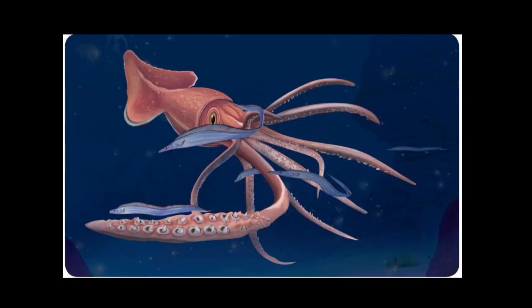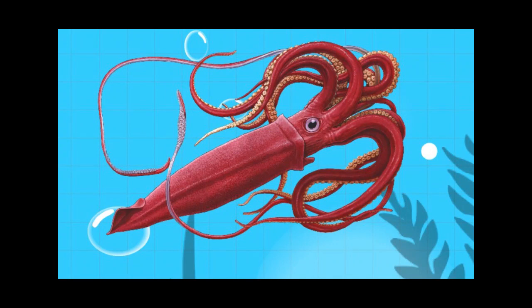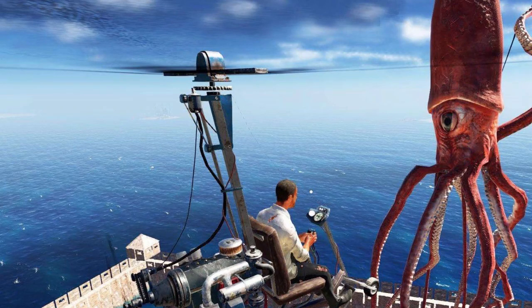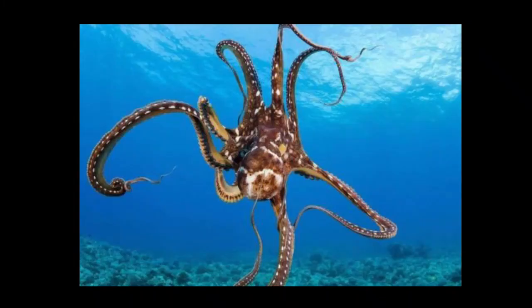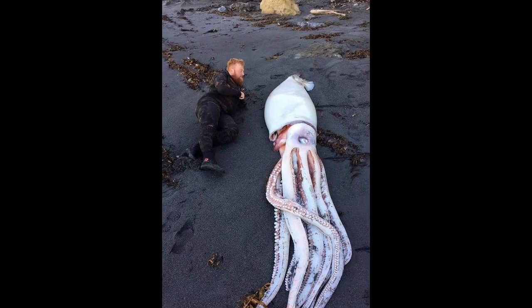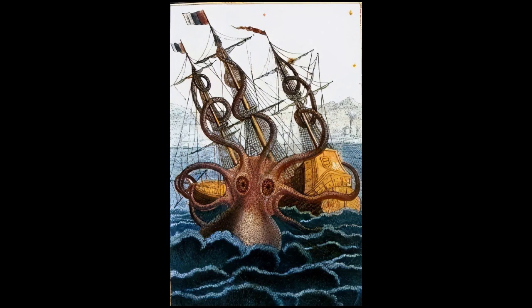The giant squid inhabits depths ranging from 300 to 1,000 meters. Their body length can reach over 10 meters, and some individuals weigh more than 100 kilograms. Their eyes are exceptionally large, comparable in size to an adult's head. According to Guinness World Records, the largest recorded giant squid, observed in Newfoundland in 1888, measured 18.3 meters including tentacles and weighed one ton. In ancient times, giant squids were considered sea monsters, but they rarely surface from the deep sea.